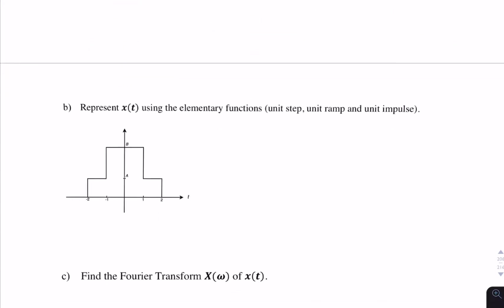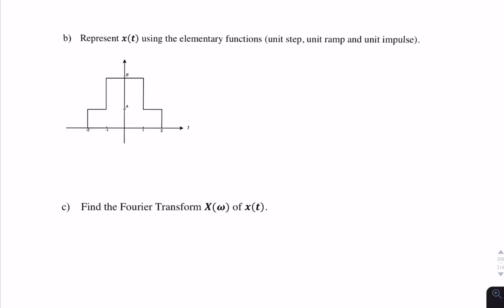For part (b), using the same signal, we're asked to represent it using elementary functions — the unit step, ramp, and impulse. Looking at this signal, there aren't any impulses or ramps; there are just a few step functions. There's a unit step here with amplitude a. So x(t) equals a times a unit step of (t + 2), because it starts at t = minus 2, shifted to the left.